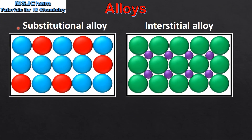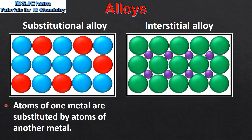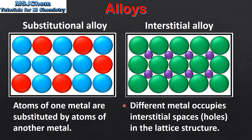Next we look at two different types of alloys. On the left we have a substitutional alloy, and on the right we have an interstitial alloy. In a substitutional alloy, atoms of one metal are substituted by atoms of another metal. In an interstitial alloy, a different metal occupies interstitial spaces or holes in the lattice structure.